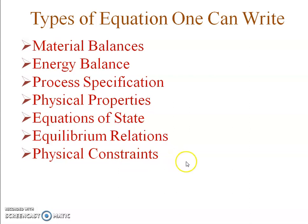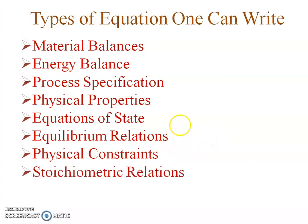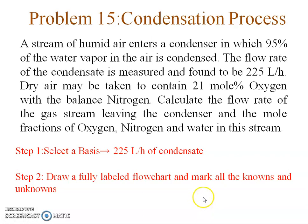Physical constraints arise when, for example, the sum of mole fractions or mass fractions equals one. Finally, stoichiometric relations become important when dealing with material balances involving chemical reactions, which I'll discuss in later videos. These are the types of equations available — be careful not to miss any when counting your equations.